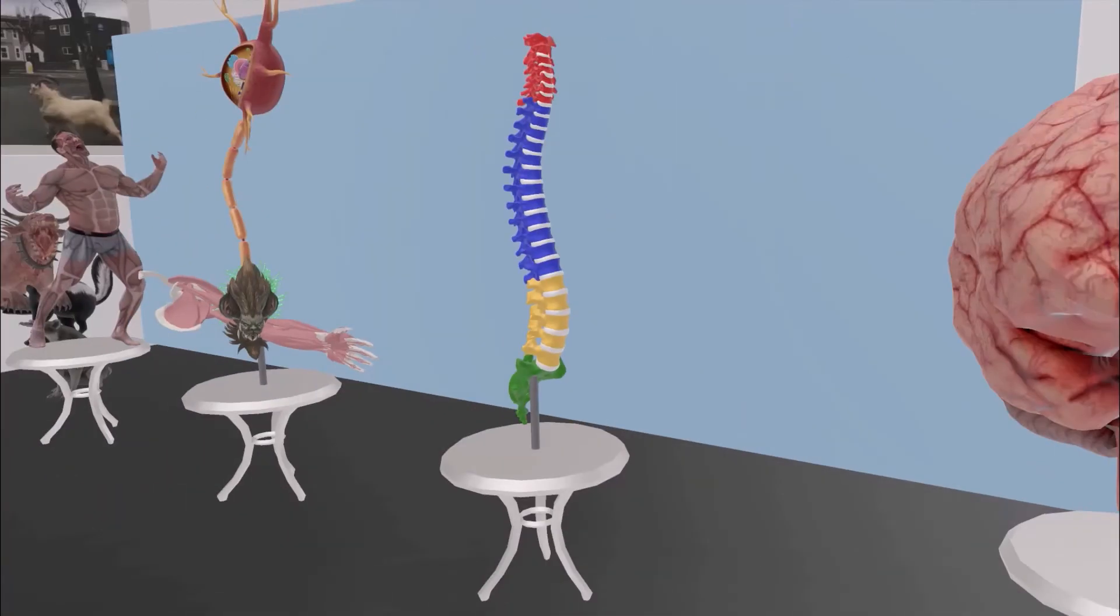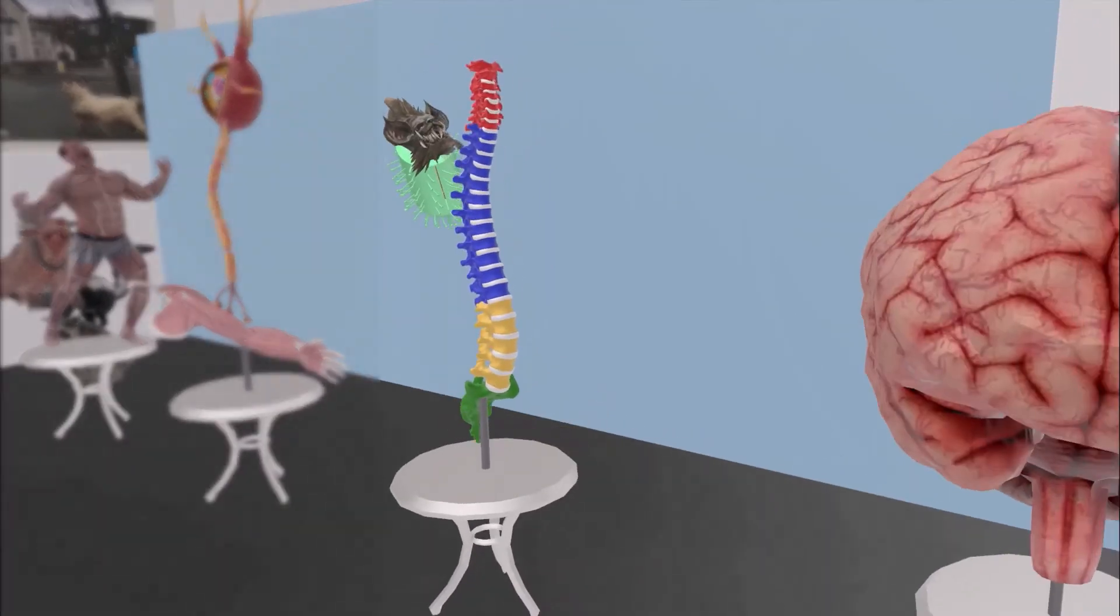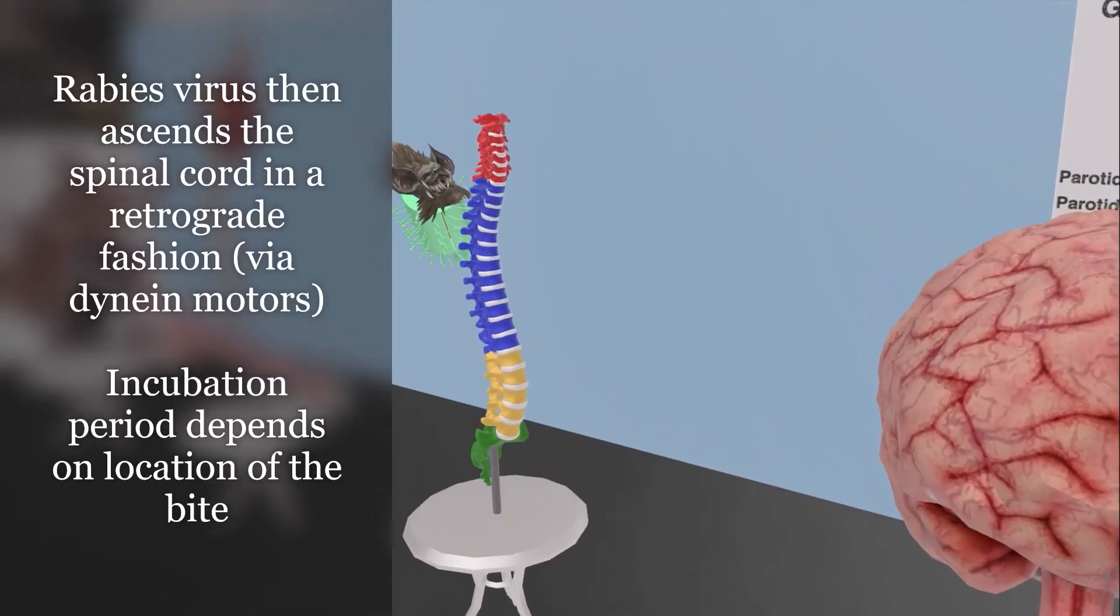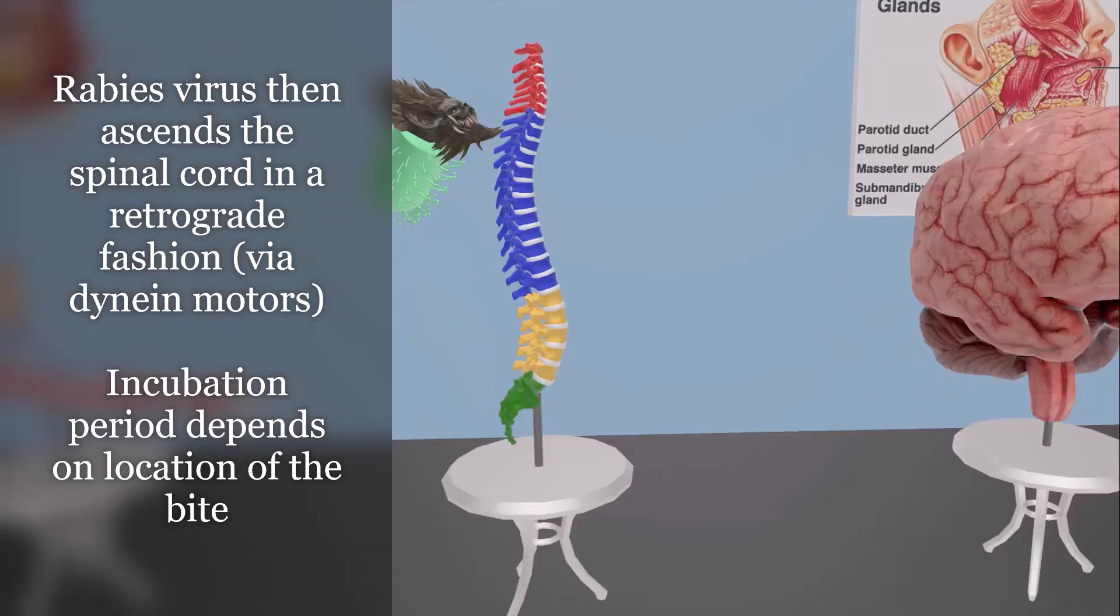The next thing we see in this anatomy lab is this spine. Inside, of course, which is the spinal cord. We see the rabies virus over here ascending the spinal cord. Here, the rabies virus travels to the CNS by migrating in a retrograde fashion through the dynein motors up the nerve axons.